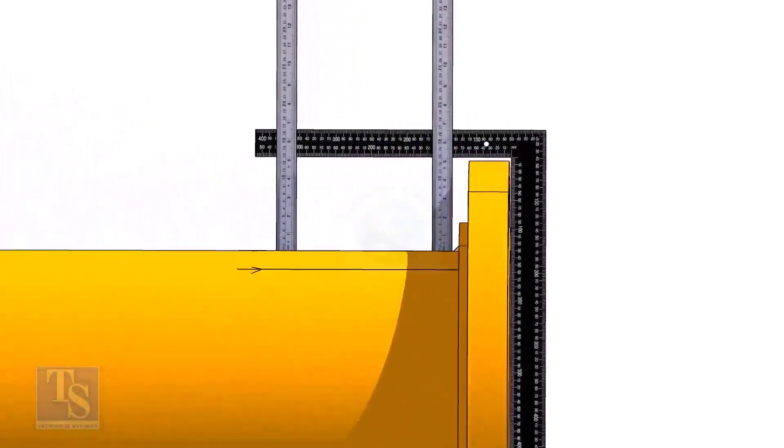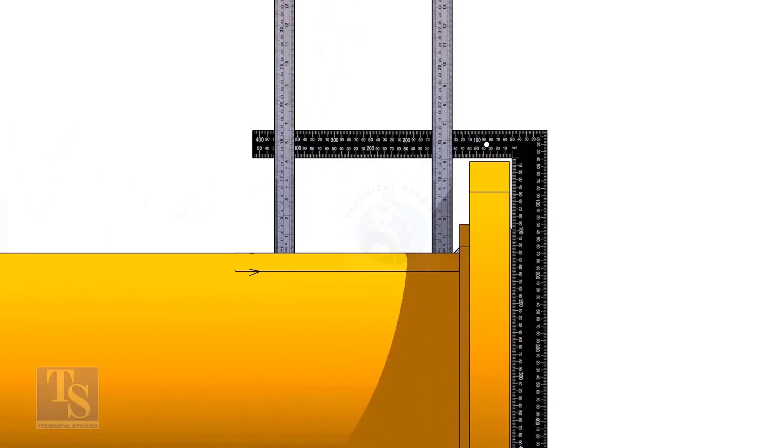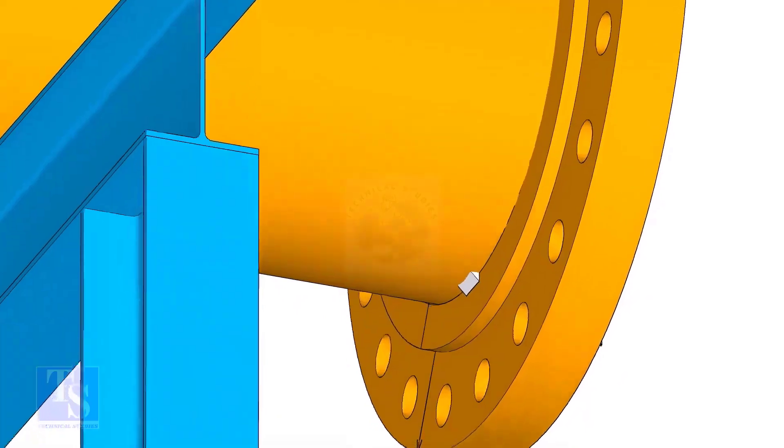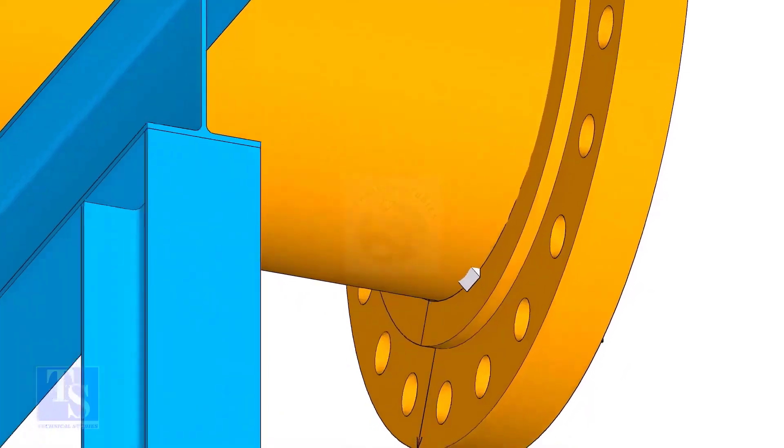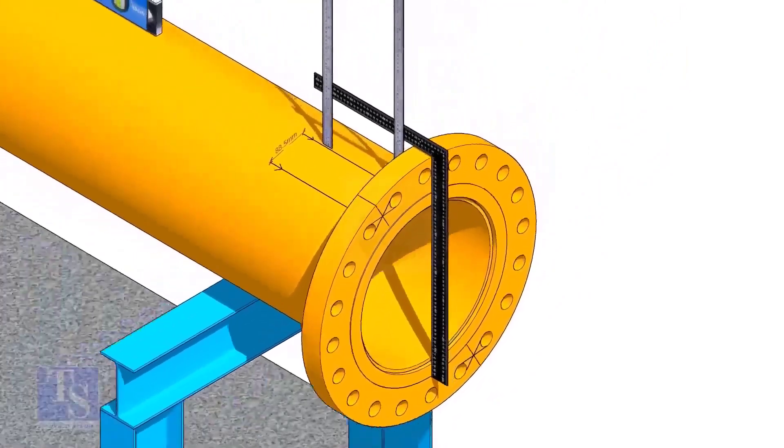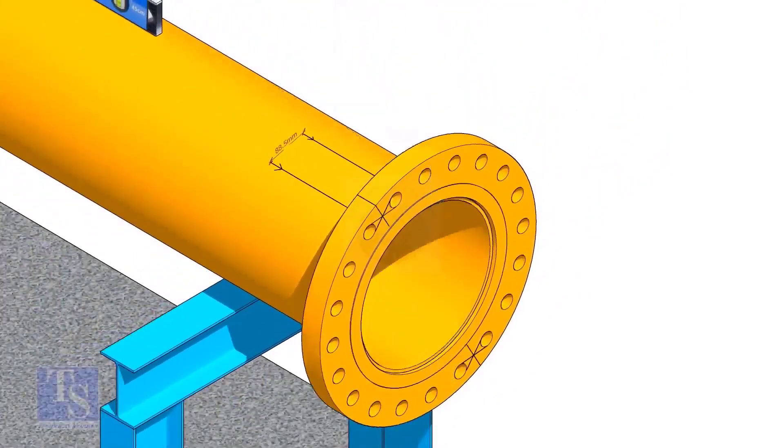Tack weld on the top of the pipe with the flange and check the squareness. If correct, tack weld at the bottom side also. Now maintain the squareness of the opposite side and tack weld on both sides.